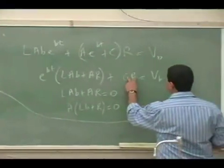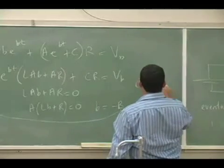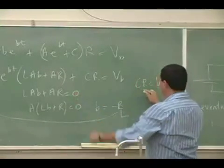And in this one, CR needs to be equal to VB. Therefore, it gives us a restriction on what C must be.